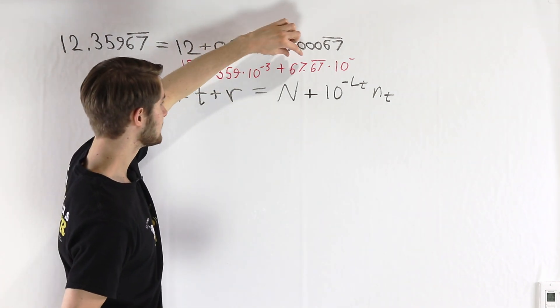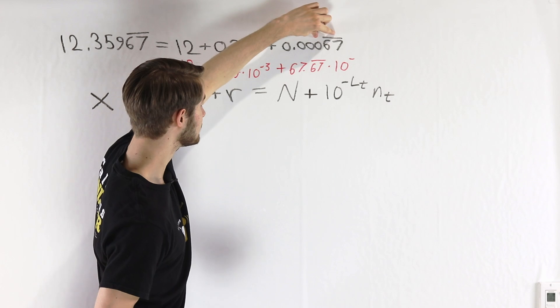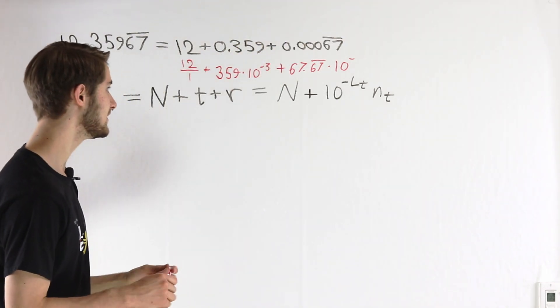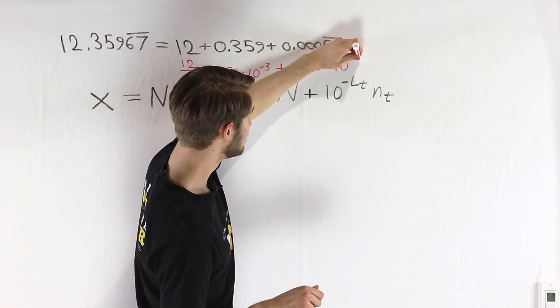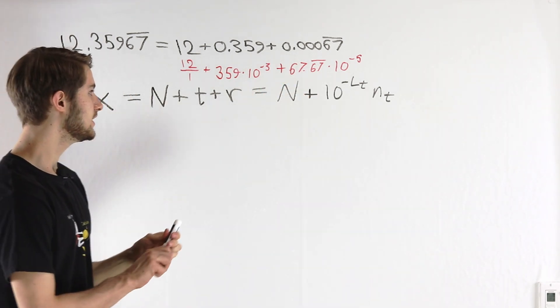In this case, if we want to get from 67 all the way over 1, 2, 3, 4, 5 places down, we need to multiply by 10 to the negative 5. So we know that for our repeating decimal in general, we're going to need to multiply by 10 to the negative something. We'll just call it k.